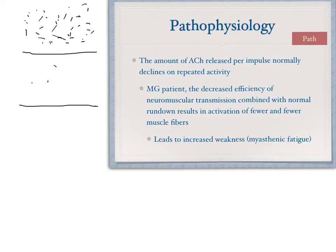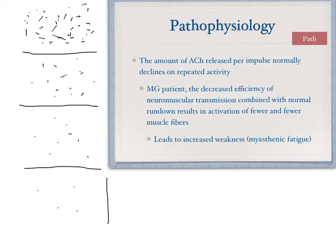But the next time it fires, our vesicles haven't had a chance to restore acetylcholine that fast. As a result, we have less and less acetylcholine being sent into the postsynaptic cleft, and as we keep trying to contract again, we have even less acetylcholine available, resulting in increased weakness.